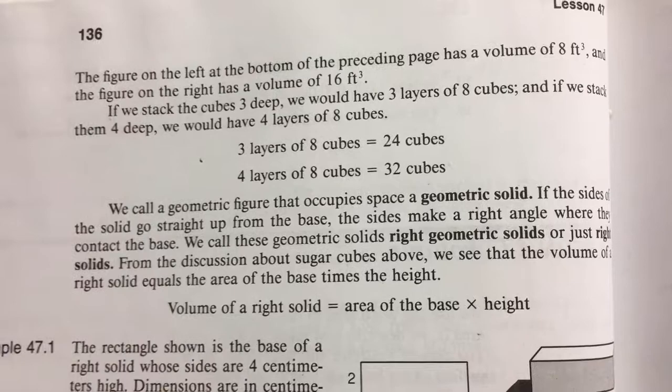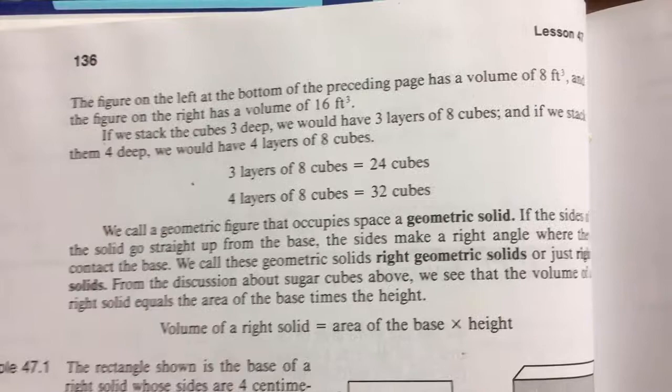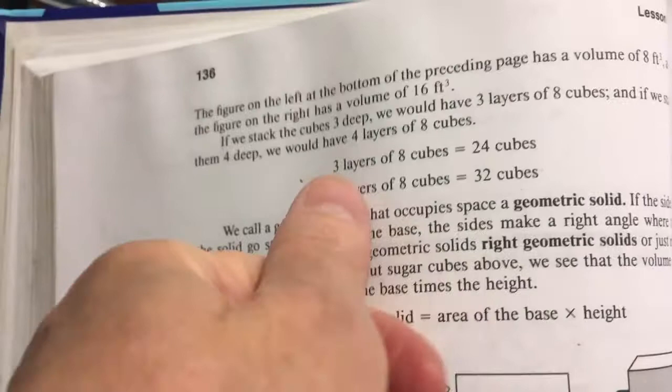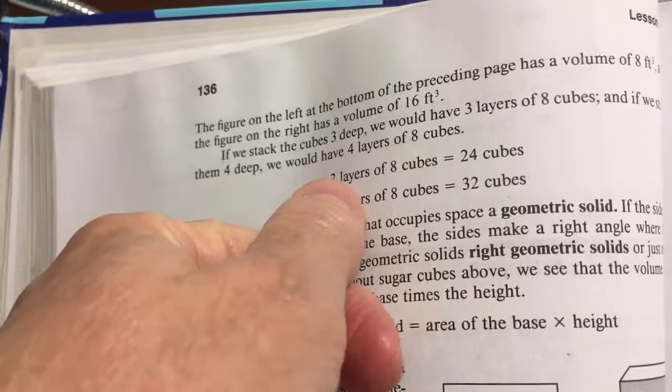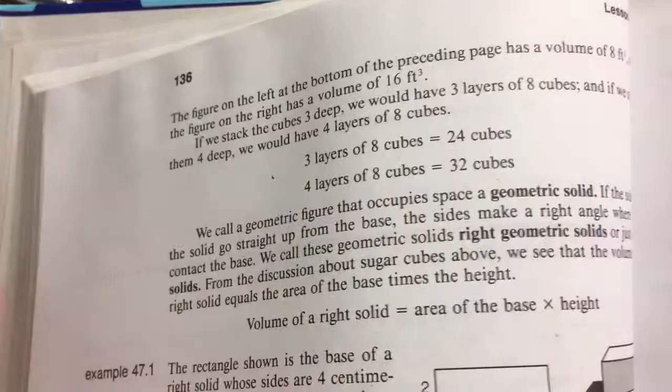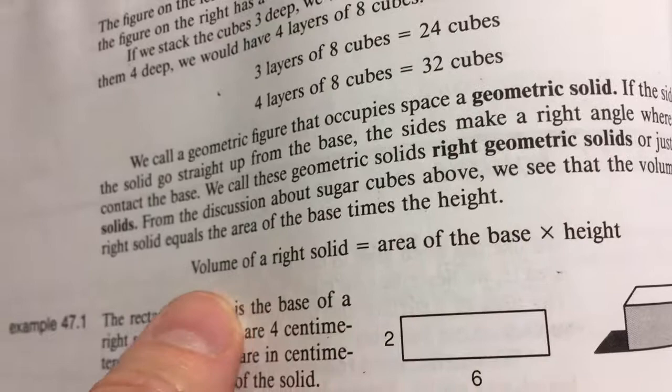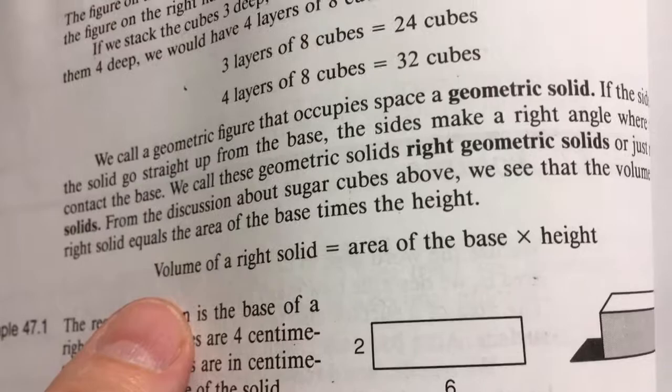They talked about the sugar cubes so you'd get an idea of what volume is. The volume of a right solid equals the area of the base times the height. The base was eight cubes; if we had three layers, we'd have three times eight or 24. If we had four layers, four times eight is 32. So the volume of a right solid is the area of the base times the height — that's a formula we want to remember.